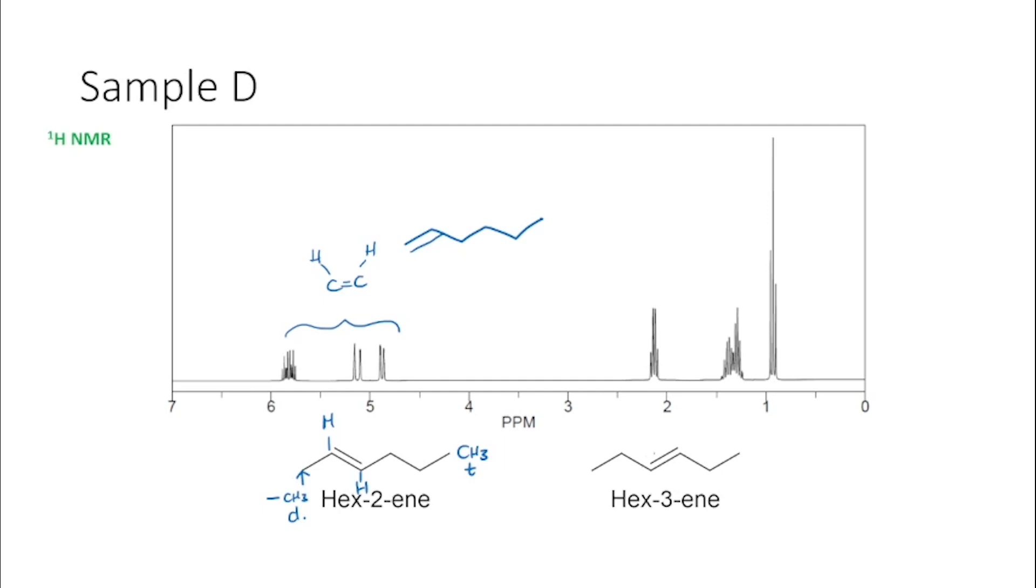So if we look at hex-3-ene, we actually have symmetry in our molecule, so we would only see half the amount of signals. We would only see three signals effectively. We would see a CH3 triplet, and that's replicated on the other side, but they're exactly the same.